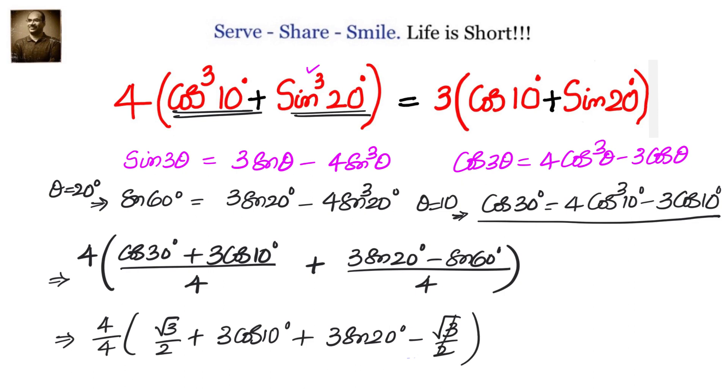Now root 3 by 2 and root 3 by 2 will cancel. 4 and 4 is cancelled. Left out is 3 cos 10 plus 3 sin 20 degrees. We can take 3 common now. So it will be 3 into cos 10 plus sin 20 degrees.